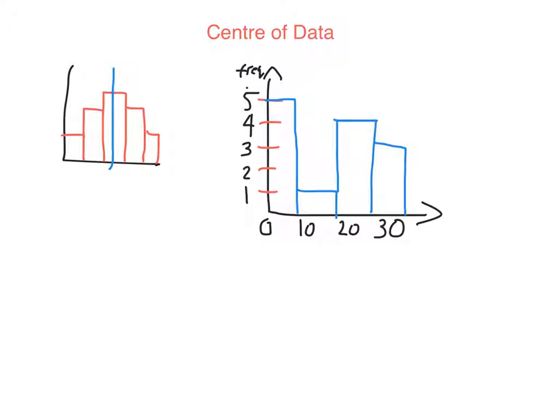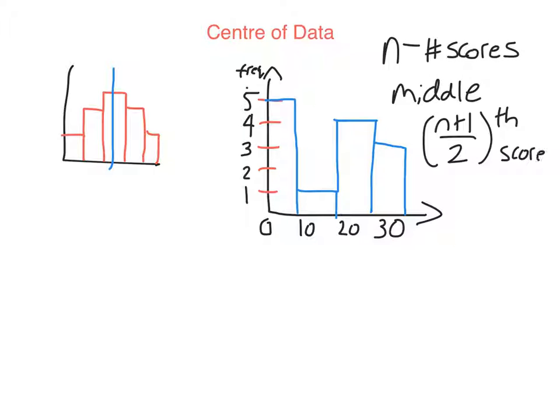So what we do is we let n be the number of scores. And we can figure that out from the frequency axis of the histogram. So the middle score, the middle point of the data, you just add one to n and divide by two. And that's the number of the score that is in the middle. So let's look at our histogram here. So we can easily figure out how many scores there are in total. So there's five scores between zero and 10, one between 10 and 20, four between 20 and 30. And then there's another three that are above 30. Okay. So the total number of scores, this is n. You just add those up and you get 13. So let's use our formula here. So n plus one divided by two will be 13 plus one divided by two, which equals seven.